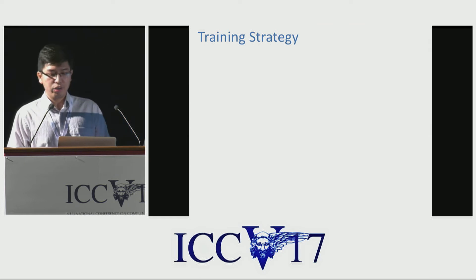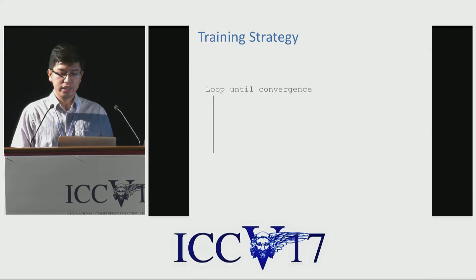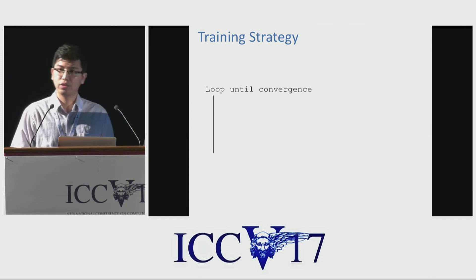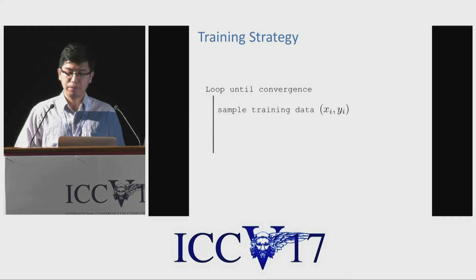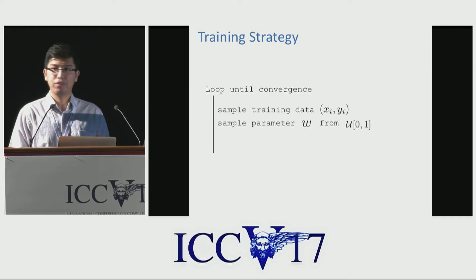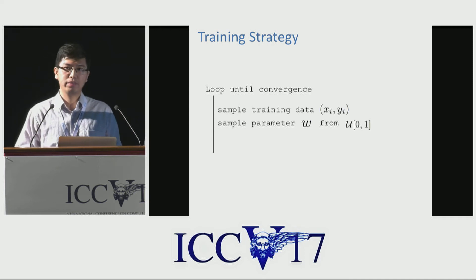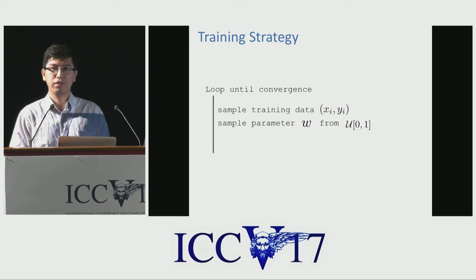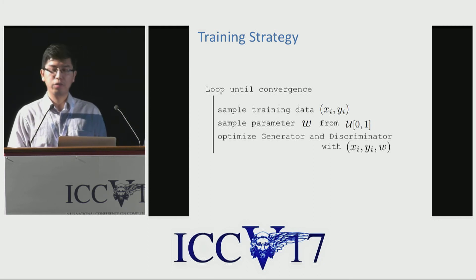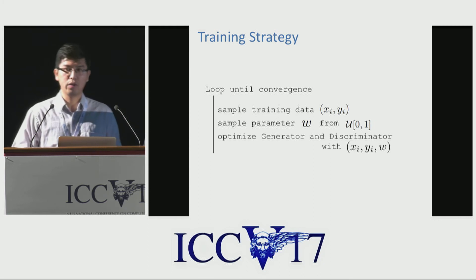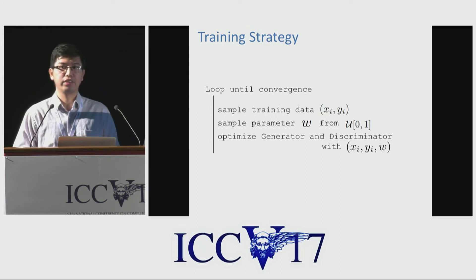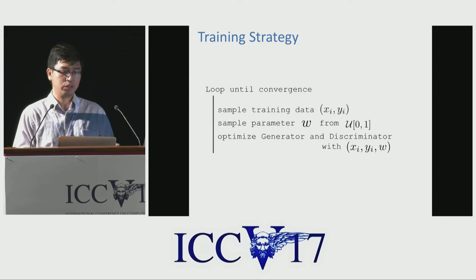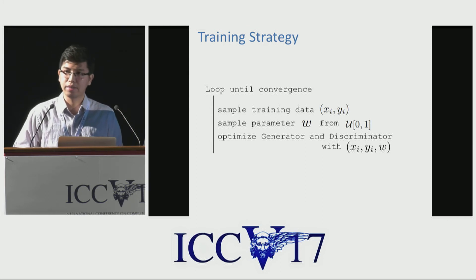In order to train the model, in each iteration we first sample the training data, and then we sample the parameter value from a uniform distribution from 0 to 1. Finally, we optimize the whole network using the combination of the sampled training data and the parameter.